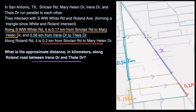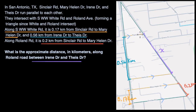Now let's do this together. The key here is that Theus, Irene, Mary Helen, and Sinclair are all parallel to each other, and they all intersect the same two roads — W.W. White Road and Roland Road. Each of them forms triangles, and actually they're forming similar triangles. That comes out of the Triangle Proportionality Theorem, which tells us that if a line intersects two sides of a triangle and is parallel to another side or another line, then the line divides the two sides proportionally. This is true no matter how many parallel lines you have.